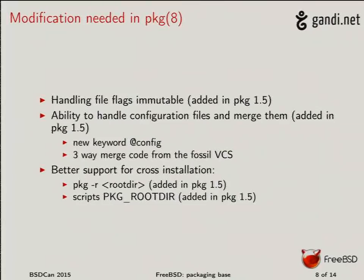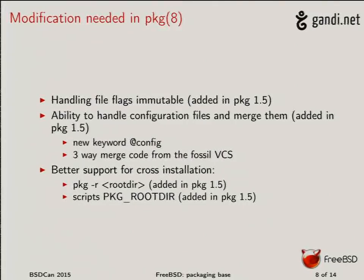That's in pkg 1.5. We also have a new keyword in the plist — the file list internal to each package. The '@config' keyword means: if a file has this keyword, keep a safe copy (a baseline) of what the file was, install the file to the system, and if the user changes it during an upgrade, we'll have the baseline, the new file, and the user's modified file so we can do a three-way merge.